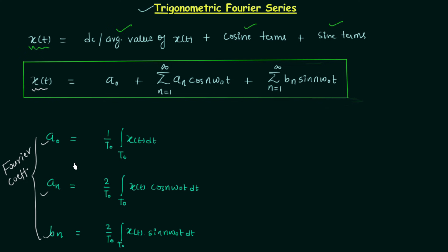Our main task is to calculate a_0, a_n, and b_n, which are the Fourier coefficients in the trigonometric Fourier series expansion, and we will see how to calculate them in examples. Now we will move to the next part of this lecture and try to understand the significance of a_n and b_n, since we already know what a_0 is.